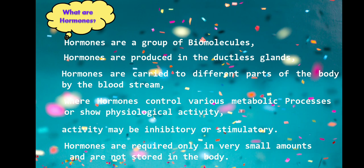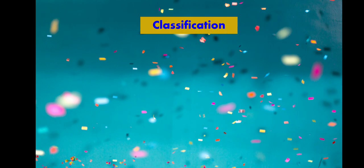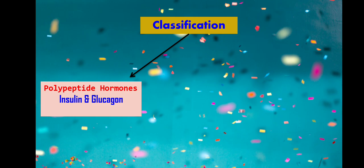To summarize: hormones are a group of biomolecules produced in the ductless glands, carried to different parts of the body by the bloodstream, where they control various metabolic processes or show physiological activity — inhibitory or stimulatory. They are required only in very small amounts and are not stored in the body. That group of biomolecules is called hormones. Now we'll see the classification.